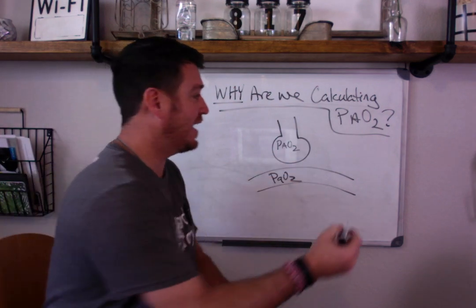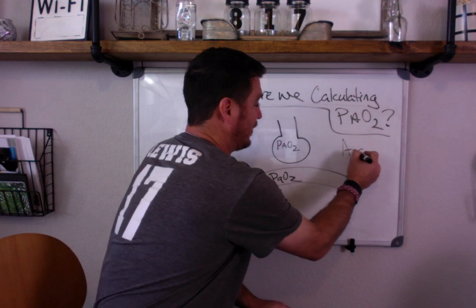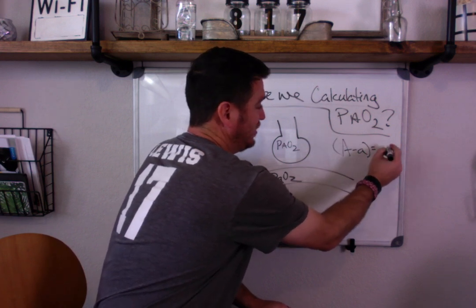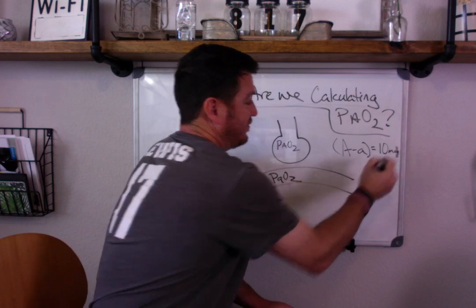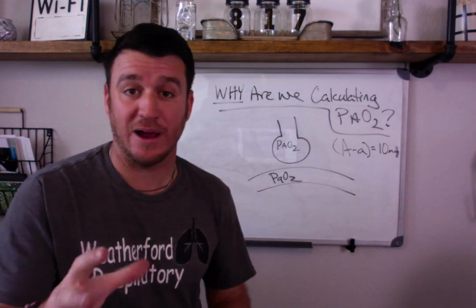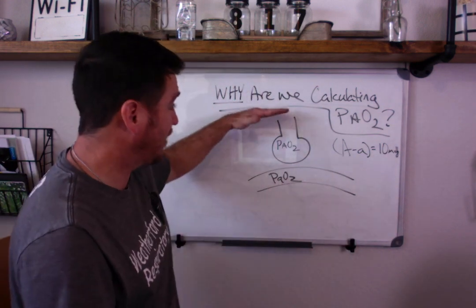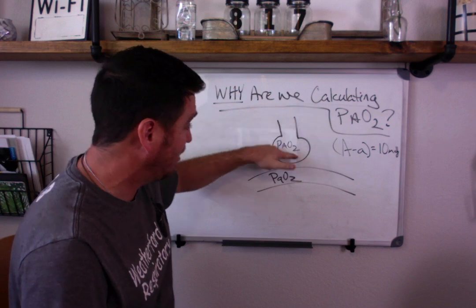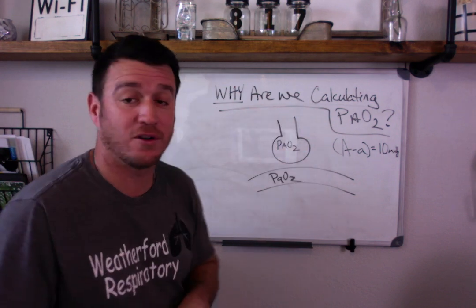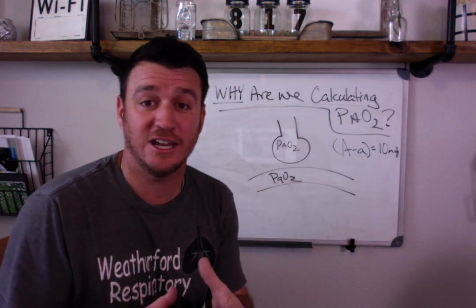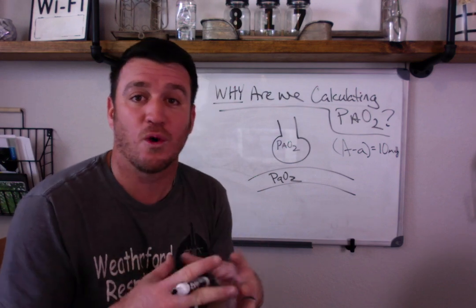If you're on room air your A to A difference should be relatively small, 5 to 10 millimeters of mercury somewhere around there, which means most of the oxygen that comes into the alveoli diffuses over into arterial oxygenation. It means your units are working very efficiently.